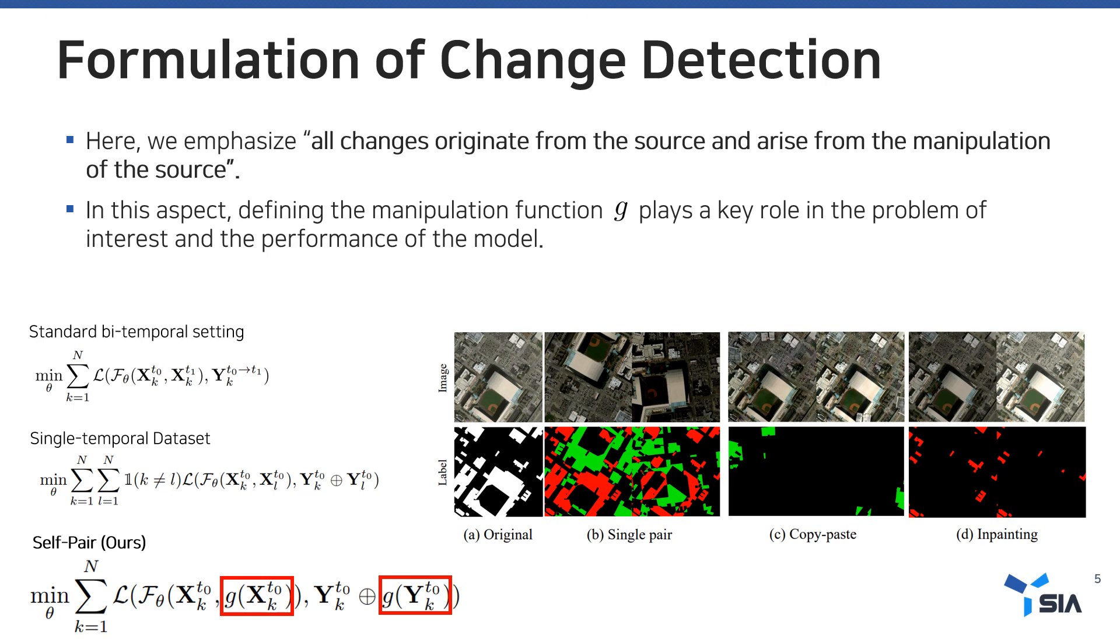We emphasize that all changes originate from the source and arise from manipulation of the source. In this aspect, we generate post-images by manipulating source images. Defining the manipulation function G plays a key role in the problem of interest and model performance.